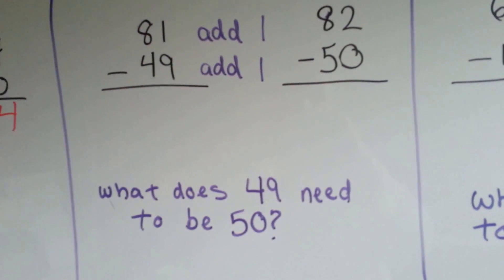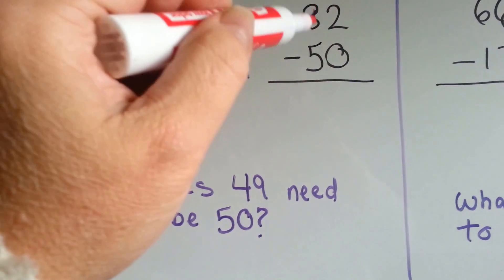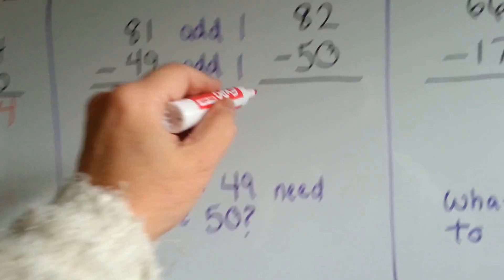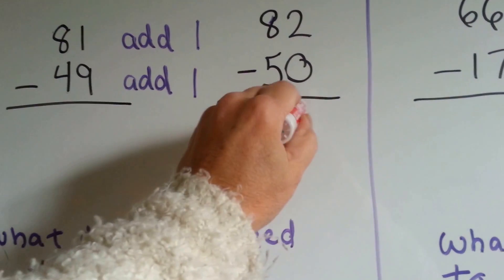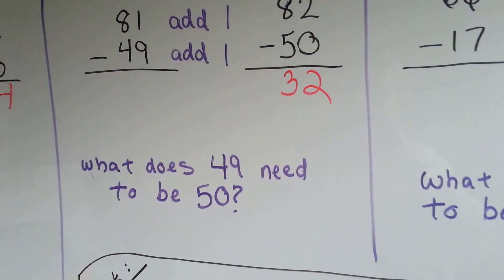81, 82. Now you could do that in your head. 82 minus 50 is 32. That's a little easier to imagine than borrowing.